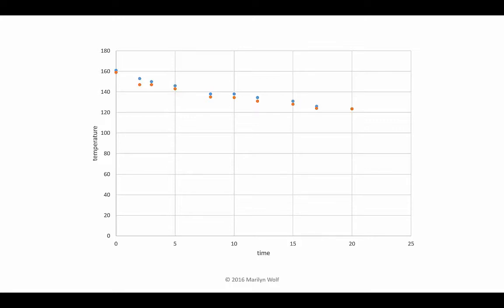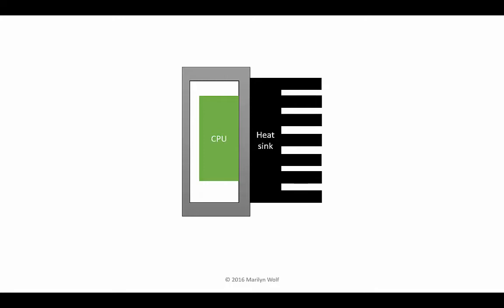In practice, we use heat sinks to help remove heat from a CPU. The heat sink is attached to the CPU, and a typical heat sink has a lot of fins that give it a large surface area. Recall that surface area is part of Newton's law formula — having a large surface area makes it easier to extract heat. We push air out into the ambient, and by moving in new air we keep the temperature of the surrounding air lower, which improves the rate of cooling in the CPU.